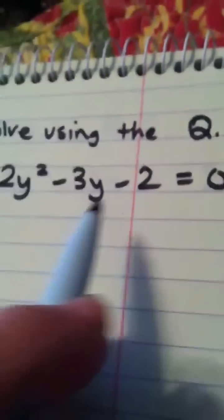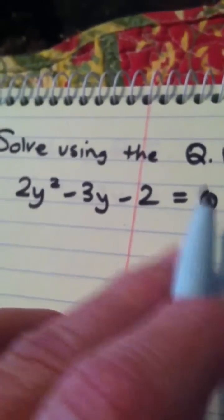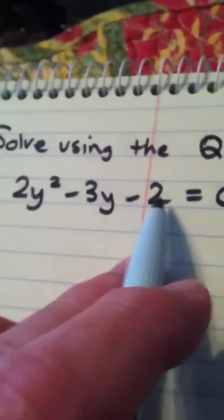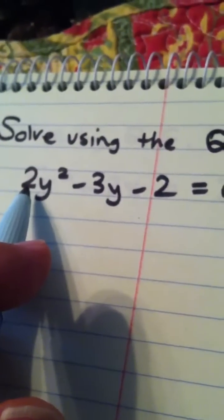Now before you can use the quadratic formula the equation has to be in standard form. So one side should be equal to zero, this should be in descending power order, which it is, and the leading coefficient should be positive, which it is.